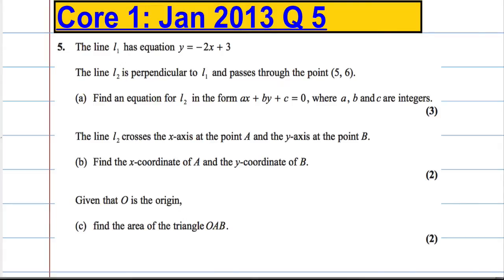Question 5. The line L1 has equation y equals negative 2x plus 3. The line L2 is perpendicular to L1 and passes through the point (5, 6).